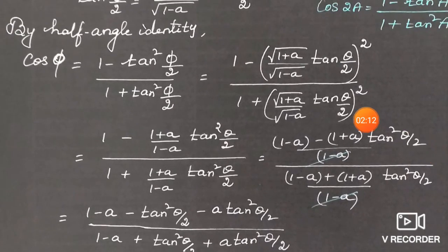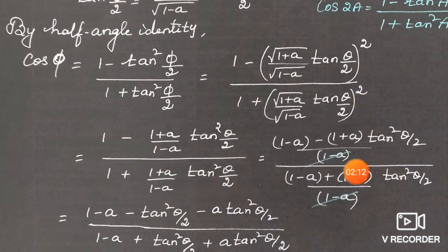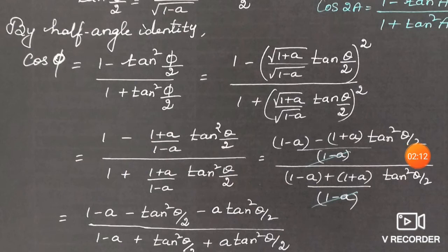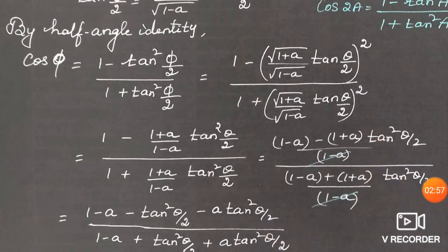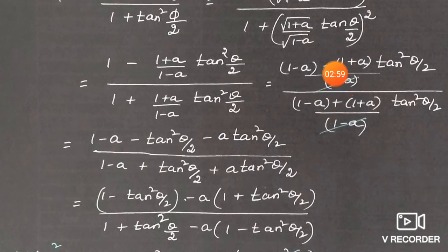Squaring the terms: √(1+a) squared is (1+a), √(1-a) squared is (1-a). So: cos φ = [1 - ((1+a)/(1-a)) · tan²(θ/2)] / [1 + ((1+a)/(1-a)) · tan²(θ/2)]. Taking LCM (1-a) in numerator: (1-a) - (1+a)·tan²(θ/2), all divided by (1-a). Similarly in denominator: (1-a) + (1+a)·tan²(θ/2), divided by (1-a).